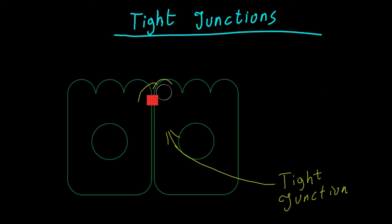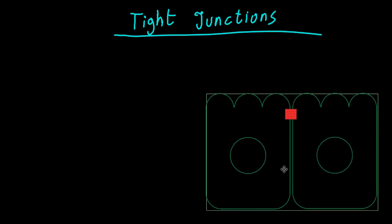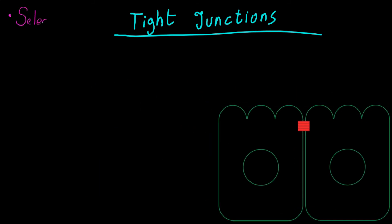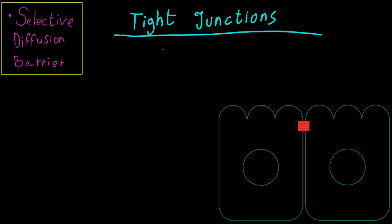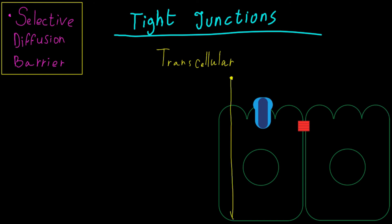Tight junctions have two functions. The first function is to create a selective diffusion barrier. Material can pass through epithelial tissue from one side to the other in two pathways: the transcellular pathway and the paracellular pathway. The transcellular pathway is when material passes through the cell itself, meaning material must pass through the plasma membrane. This process can be passive, for example by diffusion, or active, for example by active transporters which require energy.